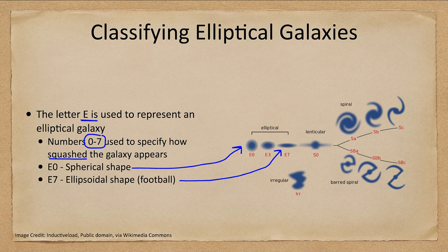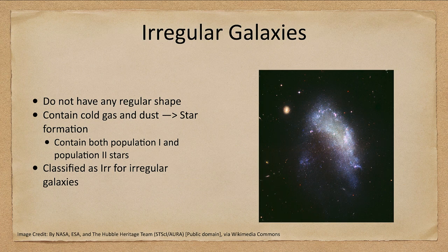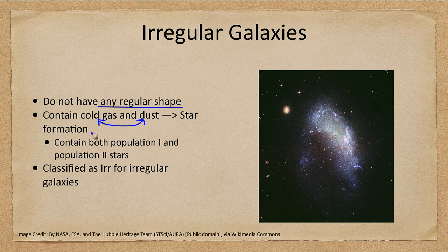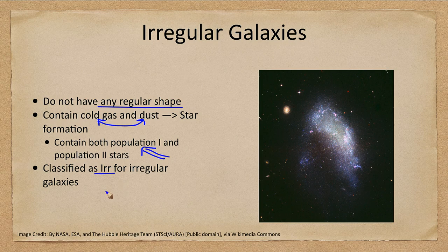Irregular galaxies, as the name suggests, do not have any regular shape. However, they do have cold gas and dust, meaning they have ongoing star formation. Like spiral galaxies, they have both population 1 and population 2 stars, and are classified as IRR. They can be further subdivided, but we won't go into that detail here.